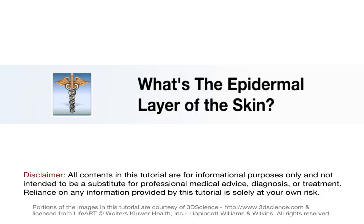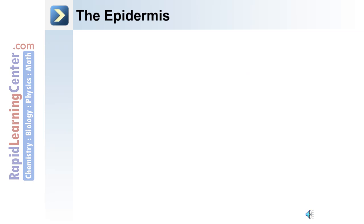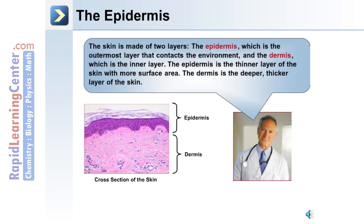Now let's move on to discuss the different layers of the skin, beginning with the most superficial or upper layer, the epidermal layer of the skin. We'll discuss the separate layers of the epidermis as well as the cell types found there. As we've mentioned, the skin is made up of two layers: the epidermis, which is the outermost layer in contact with the outside environment, and the dermis, which is the deeper inner layer. Although the epidermis is thinner than the dermis, it has more surface area.